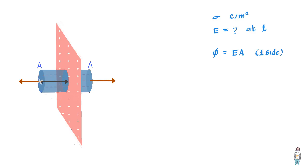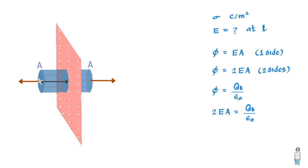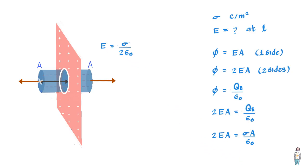Since the electric field passes through both sides, the total flux becomes 2EA. Using Gauss's equation: 2EA = Q_enclosed/ε₀. The charge enclosed is the area of the disk multiplied by the charge density σ, so Q_enclosed = σA. Therefore E equals σ/(2ε₀), and this value is the same for any distance from the sheet — it is independent of L. You can see that when dealing with symmetric surfaces, it is a lot easier to establish electric field using Gauss's law compared to Coulomb's law, and this is what makes Gauss's law so much more powerful.